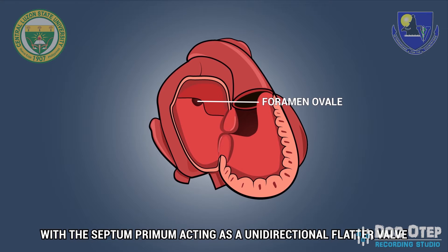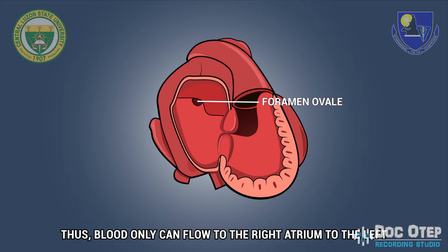The advanced edge of the septum secundum forms the foramen ovale within the septum primum, acting as a unidirectional flutter valve. Thus, blood can only flow from the right atrium to the left.